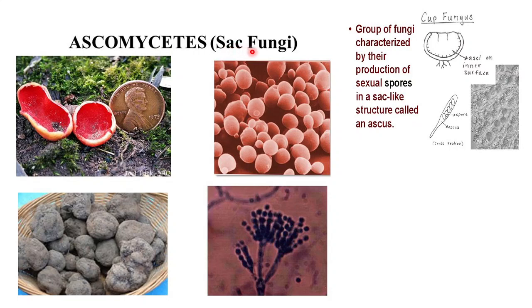Next is the group Ascomycetes, also commonly known as sac fungi. It is a very commonly occurring fungi you will see growing upon any degrading or decomposing substances. This group of fungi is characterized by the production of sexual spores in a sac-like structure called an ascus. Here is a microscopic view showing these cup-like, sac-like structures.